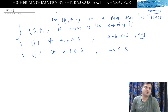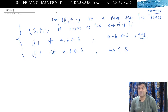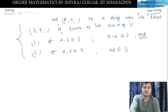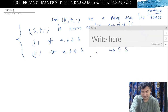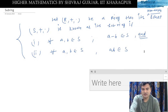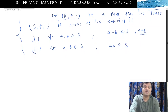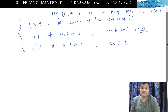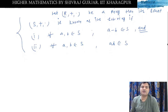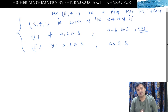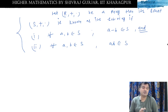Basically, a subring is itself a ring with respect to the operations of the ring, where the set S is involved. This is the same idea as a subgroup — a subgroup is itself a group with respect to the operation of the group. So same thing is here.